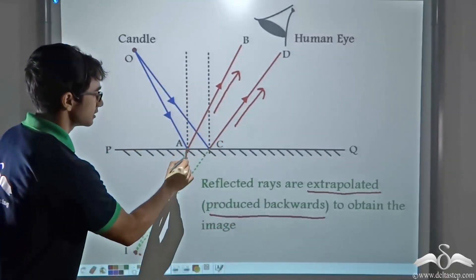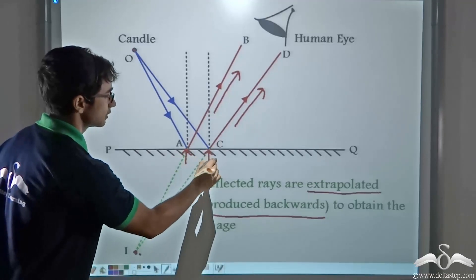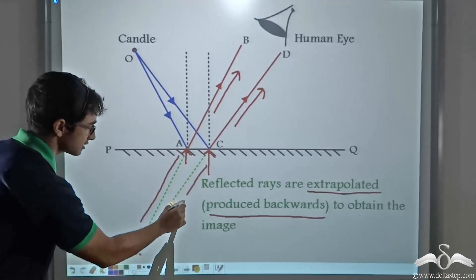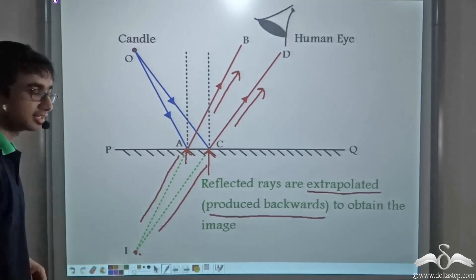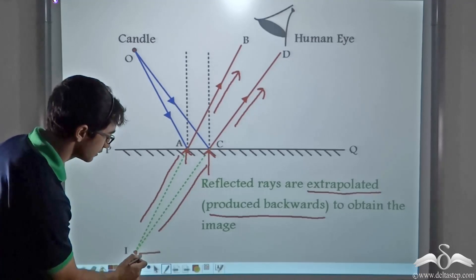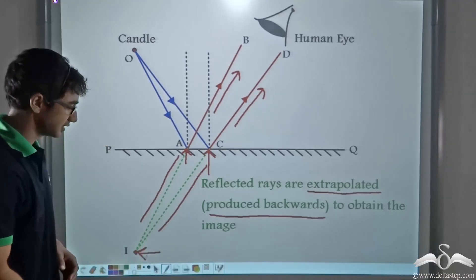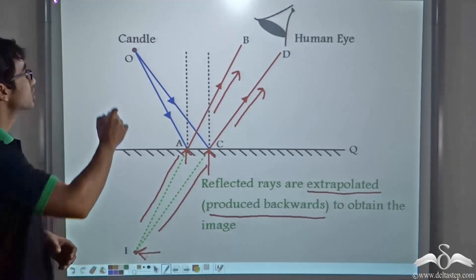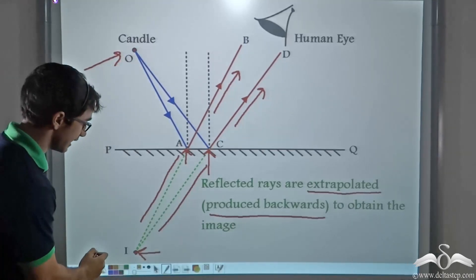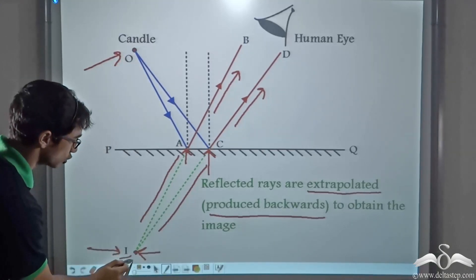So from these two points, we are producing the reflected ray backwards. And we find that these reflected rays appear to be diverging from this point. Thus we get the image of this object O, that is the candle, at this point shown by I.